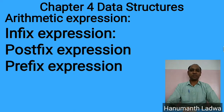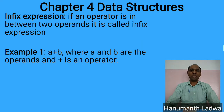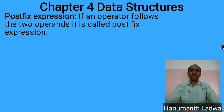We have three types of expressions: infix, postfix, and prefix. In an infix expression, the operator is placed between two operands. For example, a + b, where a and b are operands and plus is the operator. Another example is (a + b) * (c - d) * e, where a, b, c, d, e are operands and plus, multiplication, and minus are the operators.